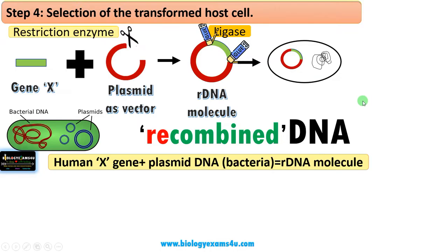Step 4 is the selection of the transformed host cell. In a transformation experiment, the majority of bacterial cells will be non-transformed, so we need to select the transformed host cell.